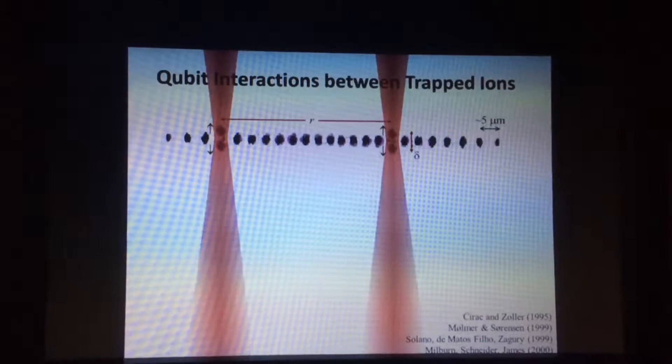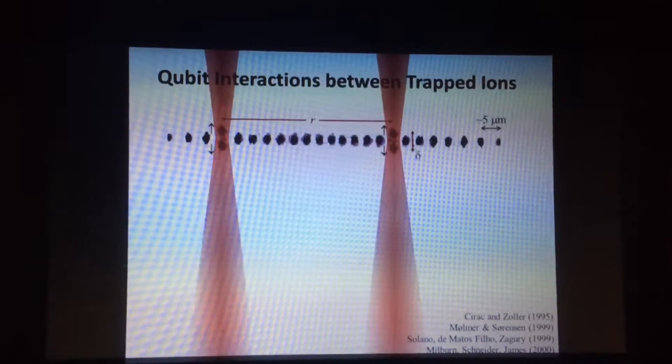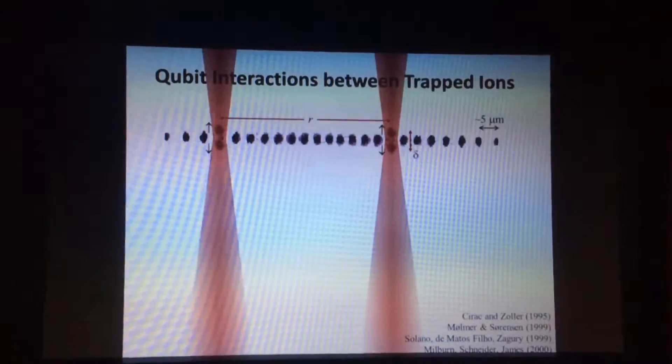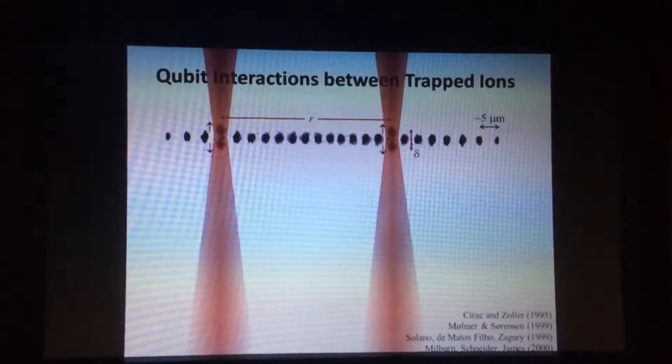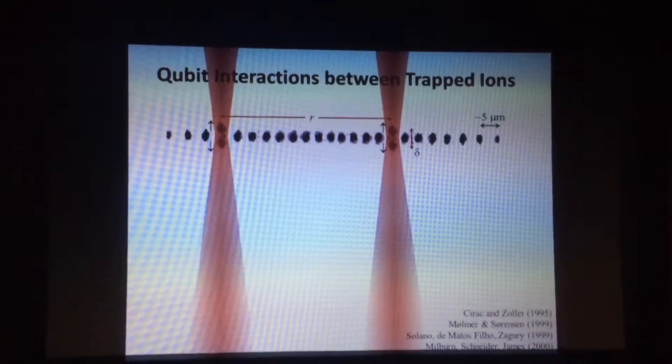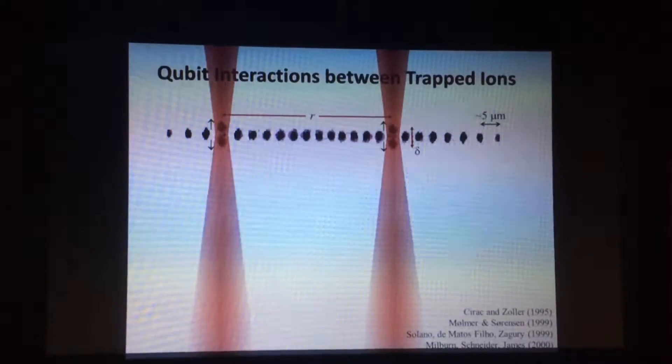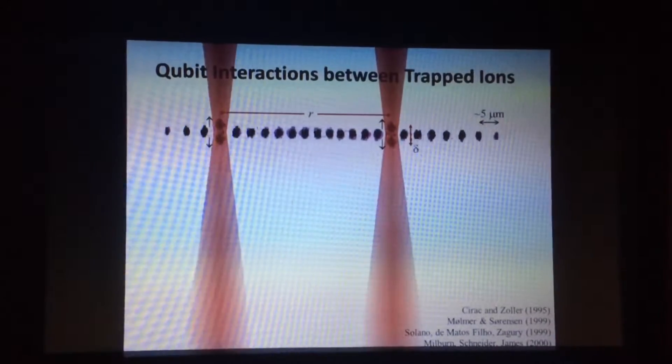In this example, if the atom is in the state spin-up, it gets pushed upward. If it's in the state spin-down, it gets pushed downward. These are called optical dipole forces. They're very well known. And there's some displacement, delta, in space between the two, up and down.